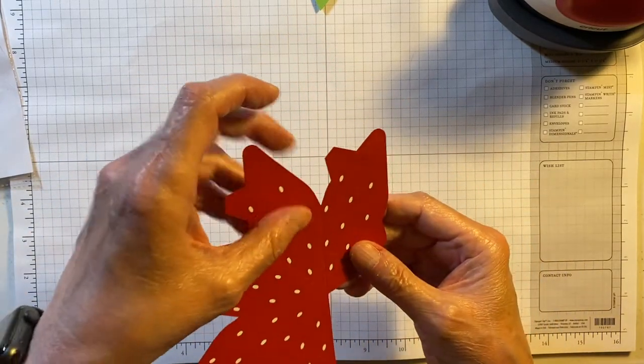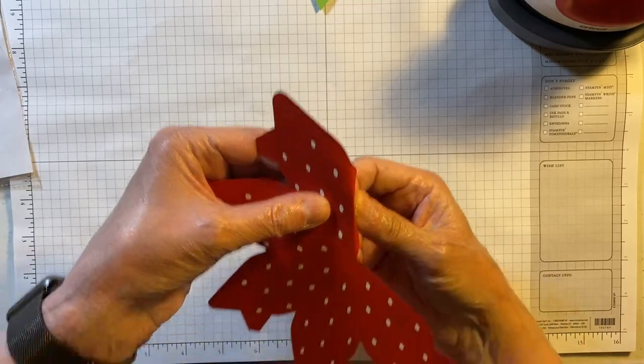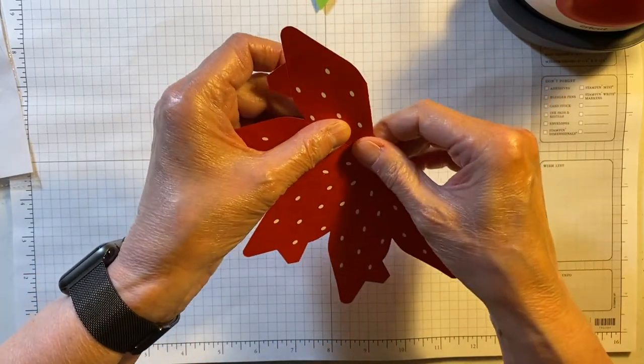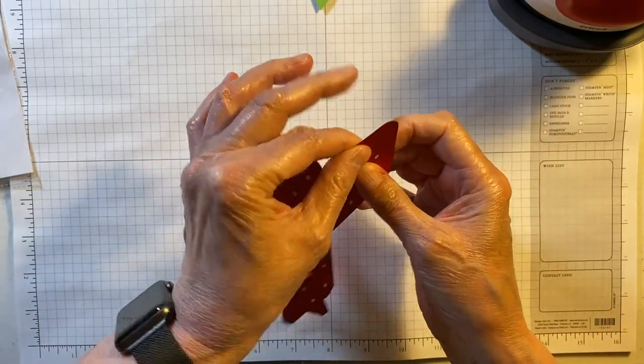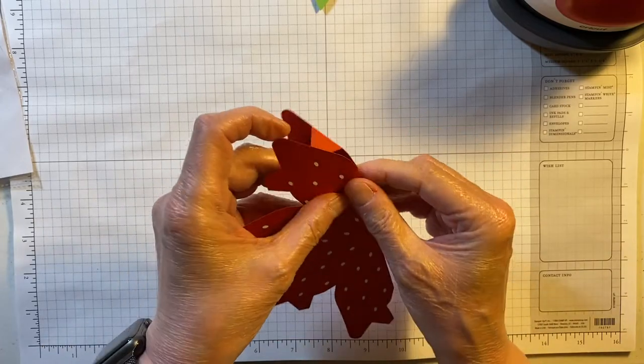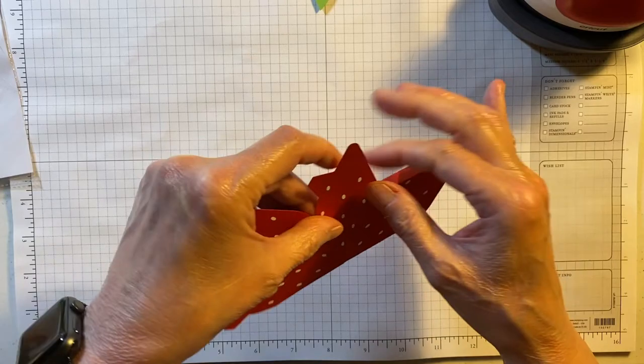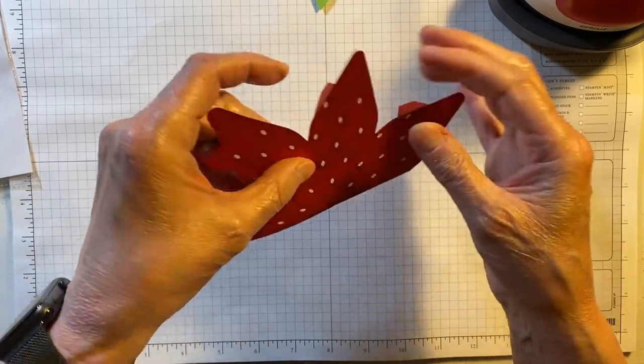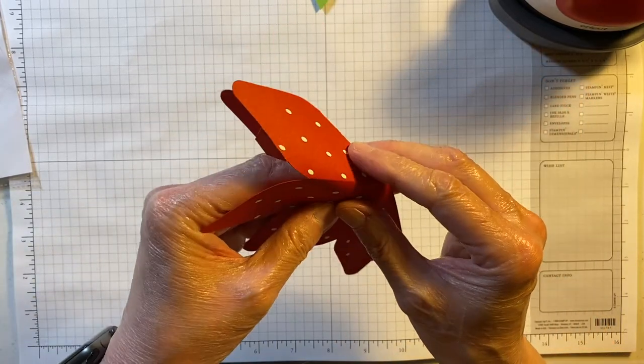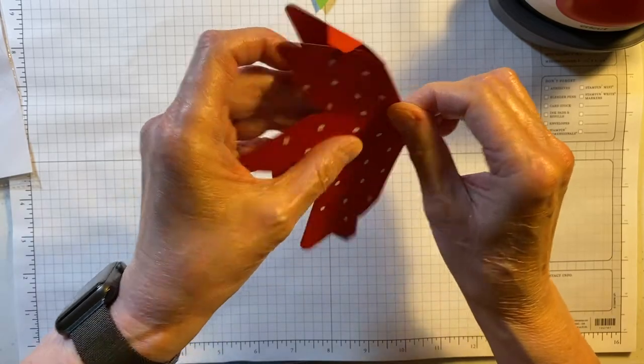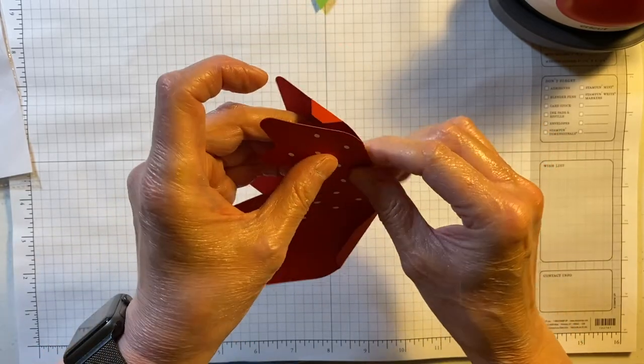Then I'm going to fold on the score lines. So I've got this piece right here. I'm going to make a bunch of these and put them in a bowl that I have on my table for the summer. Get in the spirit.